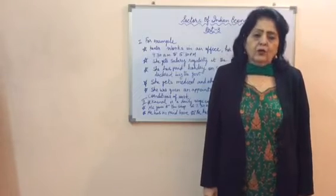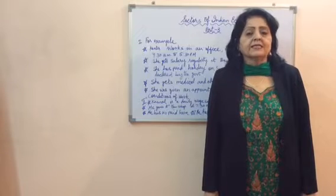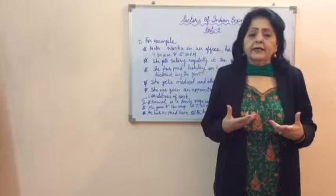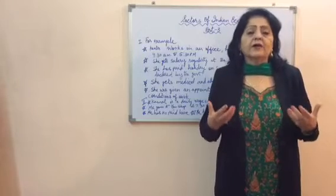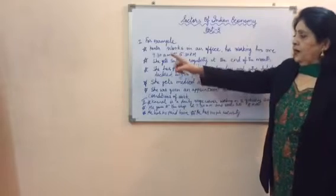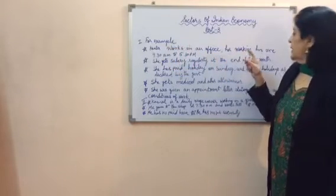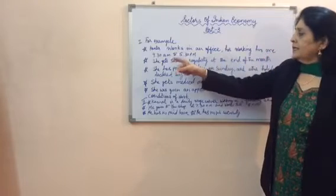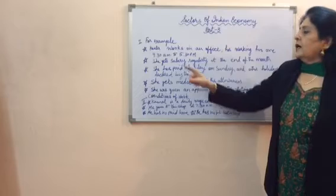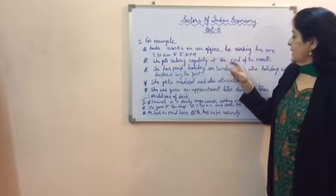In this video we are going to understand how people are employed and their terms and working conditions. Let's take the example of Kanta. Kanta works in an office. Her working hours are 9:30 a.m. to 5:30 p.m. and she gets a salary regularly at the end of the month.